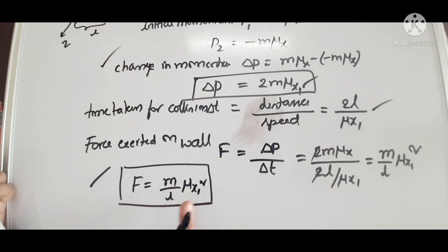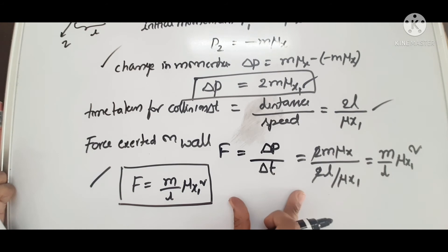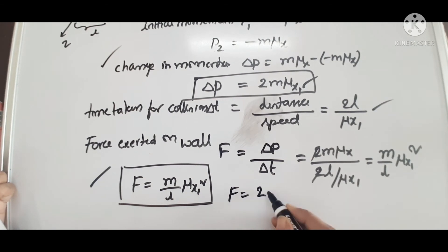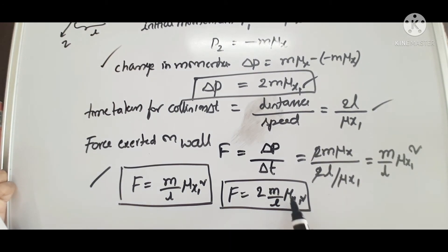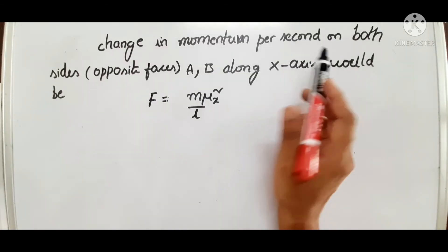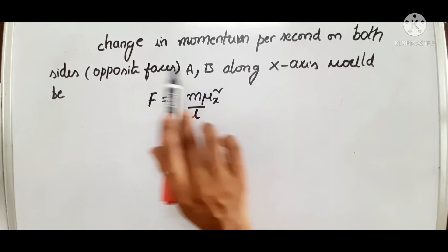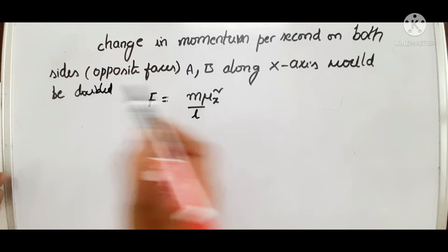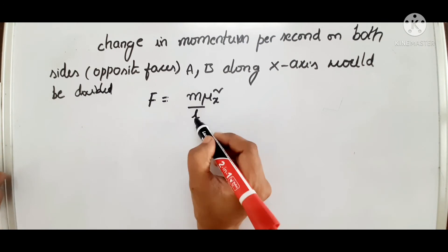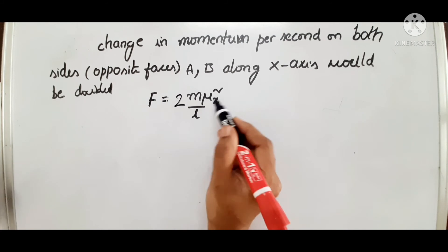Considering the change in momentum on both opposite faces A and B, the force will be doubled. F equals 2M by L times mu x1 squared. Along the x-axis, the change in momentum per second on both opposite faces would be doubled. For one side, force equals M mu x squared by L; for both opposite faces it is 2M mu x squared by L.